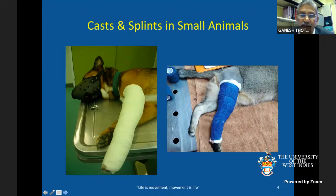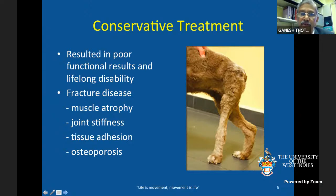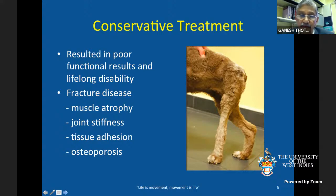However, the quality of life after fracture healing — whether short-term or long-term — is the key concern. Conservative treatment with bandages may lead to what we call fracture disease, which includes muscle atrophy, joint stiffness, tissue adhesions, and osteoporosis, particularly for fractures close to joints. This is a major problem.